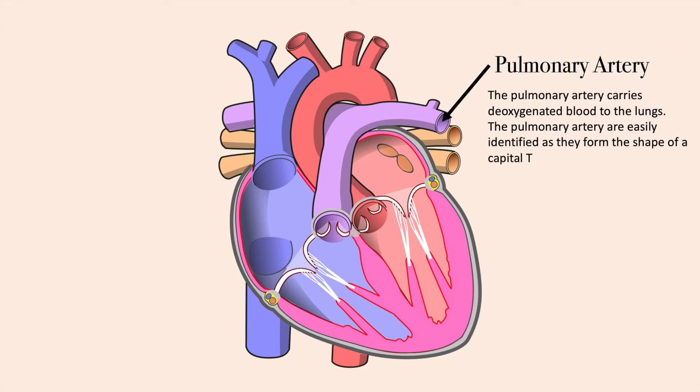The pulmonary artery carries deoxygenated blood to the lungs. It is easily identified as the arteries form a shape of a capital T.